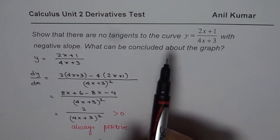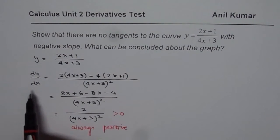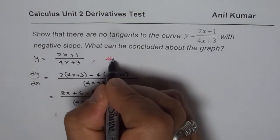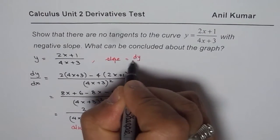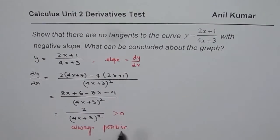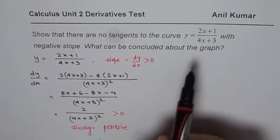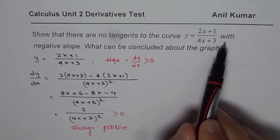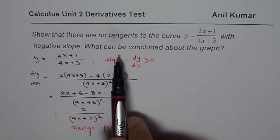So that is the first part. The tangent slope is given by dy/dx, which gives us the slope of the tangent at any point. Since dy/dx is always positive — greater than 0 — we have shown that there is no tangent on this curve with negative slope.